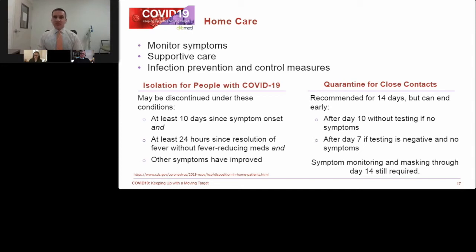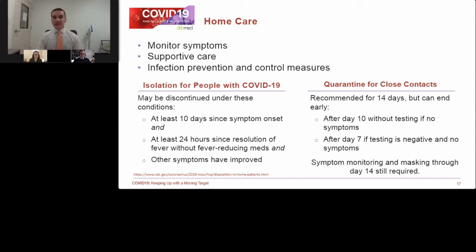Quarantining for close contacts is very important, particularly for household members. Try to isolate and designate one person from the family to be the primary caregiver. About one in three people in Los Angeles County have been infected with COVID-19. I try to find the person in the family who's had a previous infection — they become the primary caretaker because they'll have less risk of another infection, assuming they have some immune response. It's up to 14 days of quarantining, which can be really difficult. There are tools: if you can get a COVID-19 test at least five days after exposure, you can break quarantine at seven days.